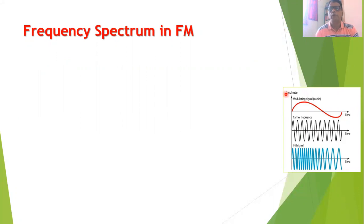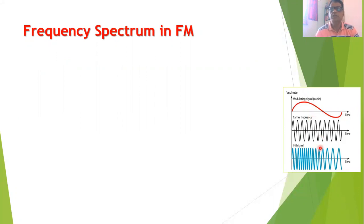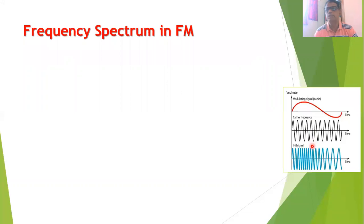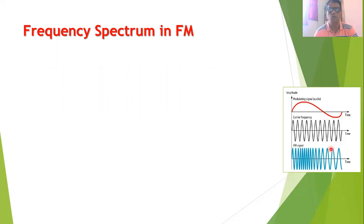In FM, the modulating signal is a low-frequency information signal and the carrier signal is a high-frequency signal. In FM, the frequency of the carrier signal changes in accordance with the modulating signal — when the amplitude of the modulating signal is high, the FM signal frequency is high; when it is low, the FM signal frequency is also low.